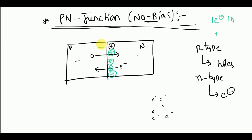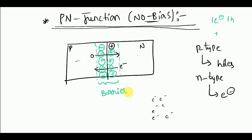In the P-type, as the electron recombined with a hole, you will get negative ions on this side and positive ions on the other side. This region is called the barrier or depletion region.